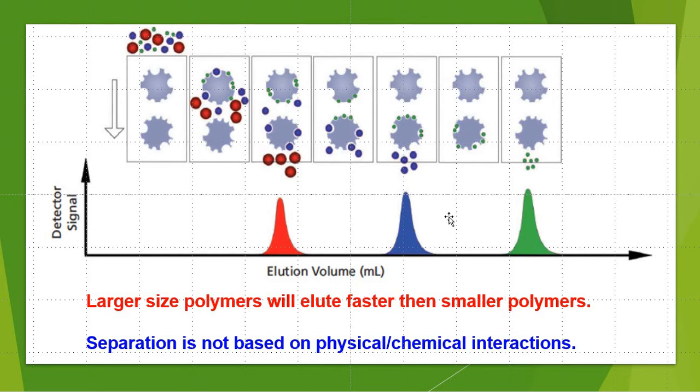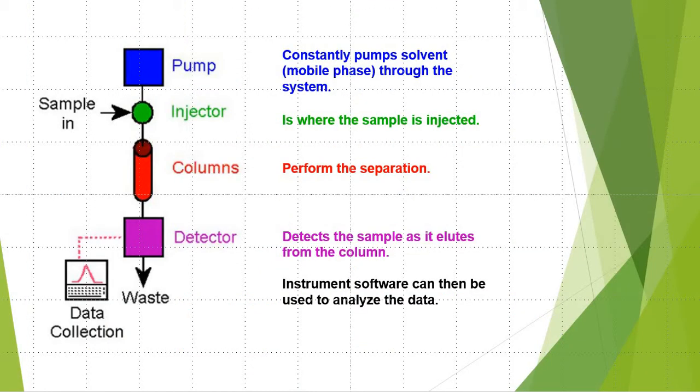And it is important to note that this separation, unlike other types of chromatography, is not based on physical and or chemical interactions with the packing material. A GPC system will generally consist of the following components.